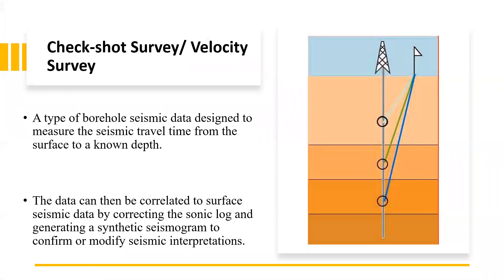CheckShot survey is also known as velocity survey. P-wave velocity of formations encountered in a wellbore can be measured directly by lowering a geophone to each formation of interest, sending out a source of energy from the surface, and recording the resultant signal in the wellbore. CheckShot survey is a type of borehole seismic data designed to measure the seismic travel time from the surface to a known depth.